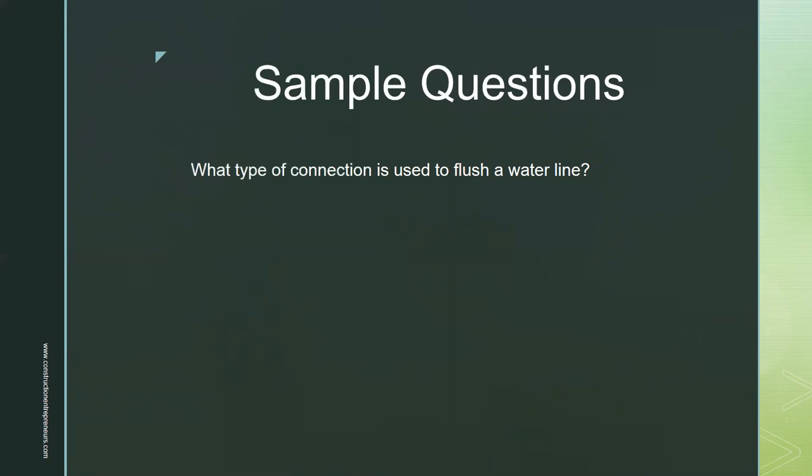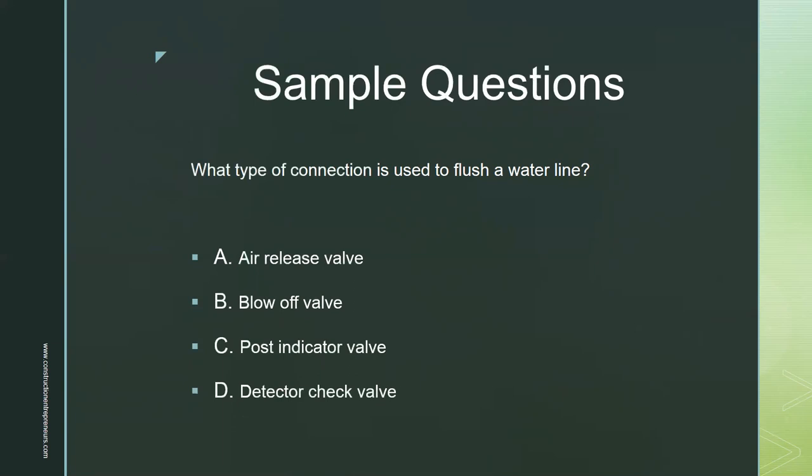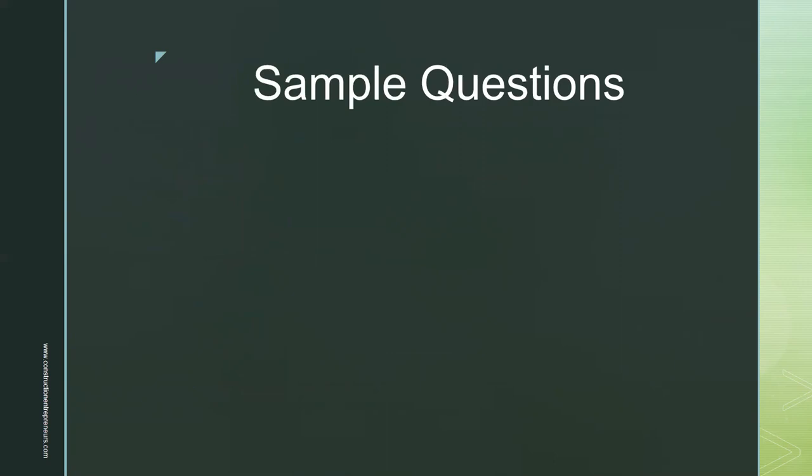Sample question: What type of connection is used to flush a water line? A — air release valve. B — blow off valve. C — pulse indicator valve. D — detector check valve. The answer is B, blow off valve.